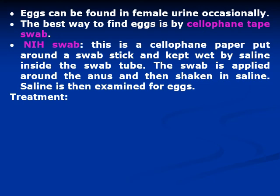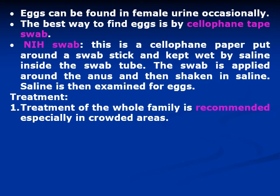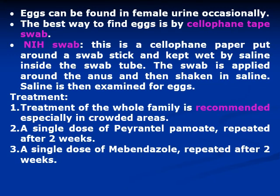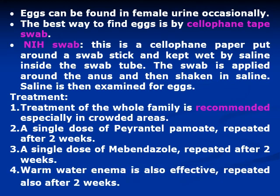Treatment of the whole family is recommended, especially in crowded areas. A single dose of pyrantel pamoate repeated after two weeks can be given. Mebendazole as a single dose repeated after two weeks is also effective and is usually given to infected individuals. Warm water enema is also effective when repeated after two weeks, as it expels the adult females.